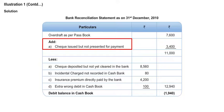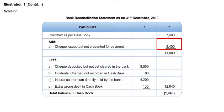Cheques issued but not presented for payment: 3400. Now when the cheques are issued, the entry will appear in your cashbook. Since we are making payment, our overdraft balance in cashbook will increase. This entry is not yet appearing in your passbook, so the cashbook overdraft balance will be higher compared to the passbook overdraft balance. So 3400 we will add — cheques issued but not yet presented for payment.